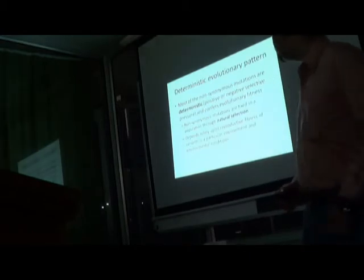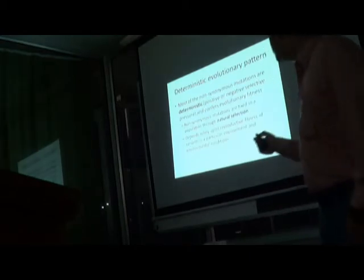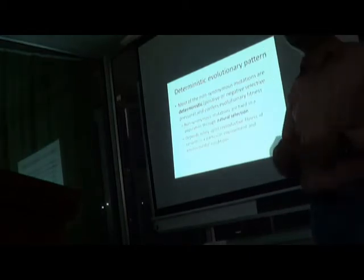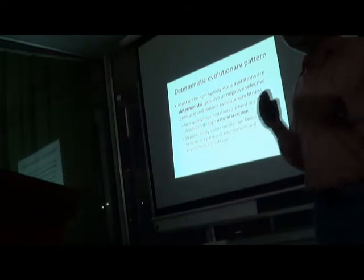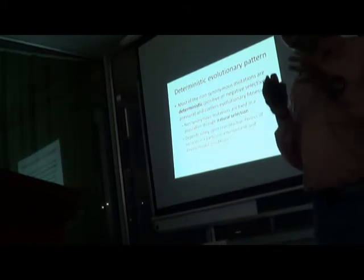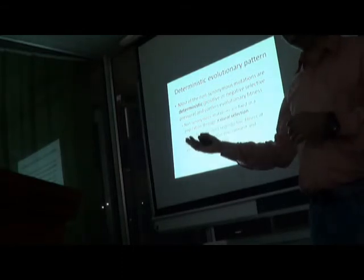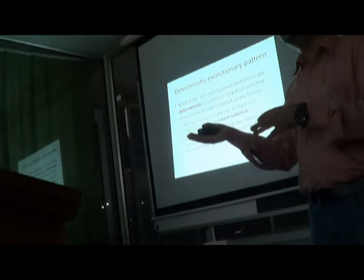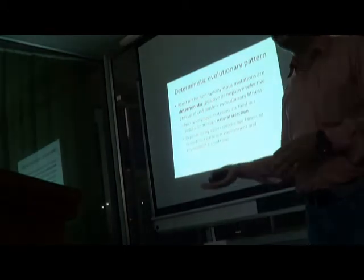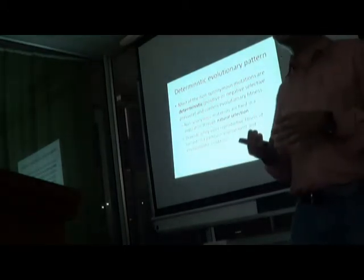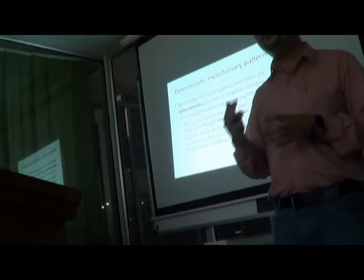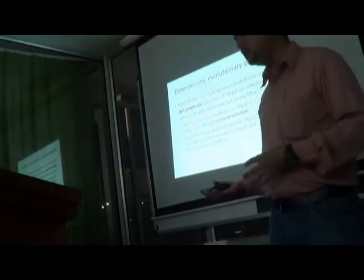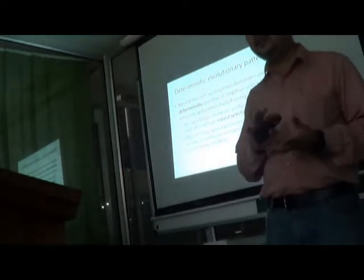The evolutionary pattern is quite deterministic in a Darwinian mode. Deterministic means it's going from today forward — after one million years, what is going to be. It's directional towards fitness. Fit alleles are always selected and non-fit alleles are removed from a population. That is what you call the deterministic pattern of evolution.